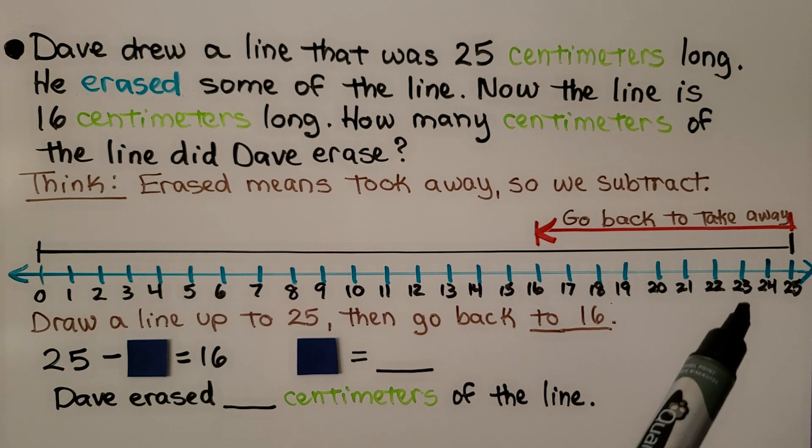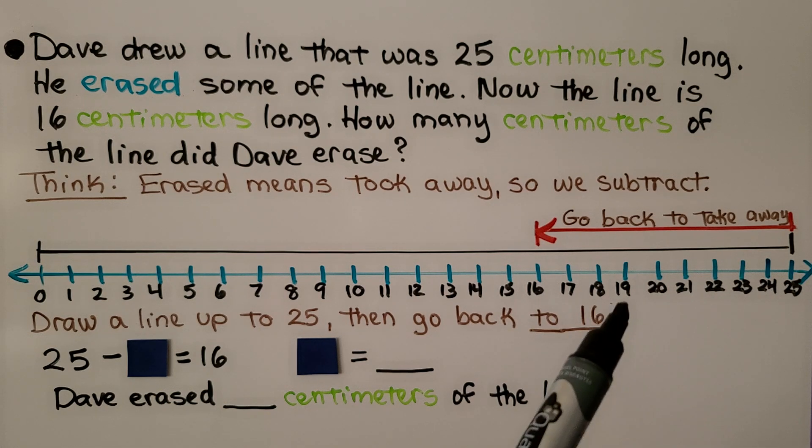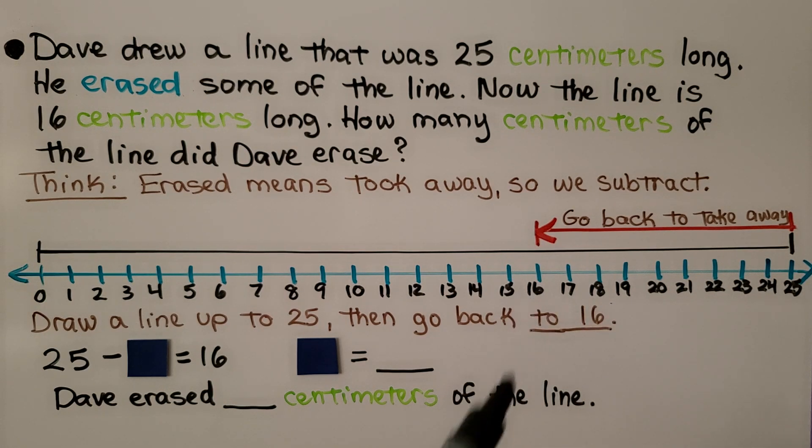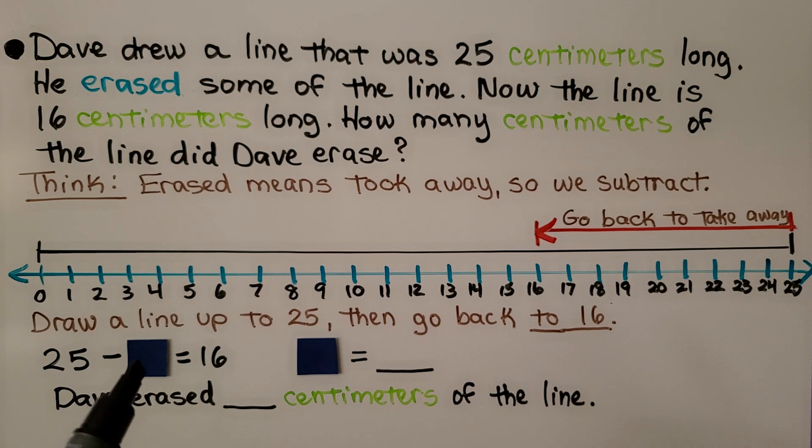We went back 1, 2, 3, 4, 5, 6, 7, 8, 9. 25 minus this square is equal to 16. The square must be equal to 9. That means Dave erased 9 centimeters of the line.